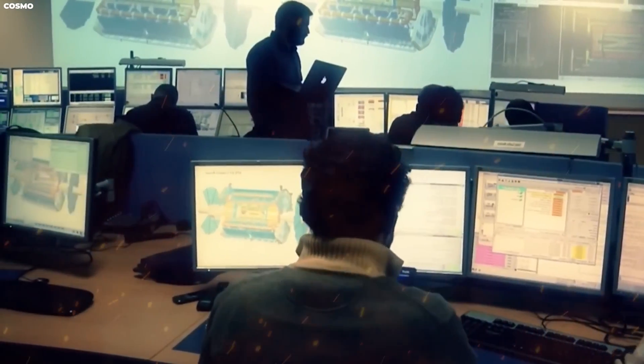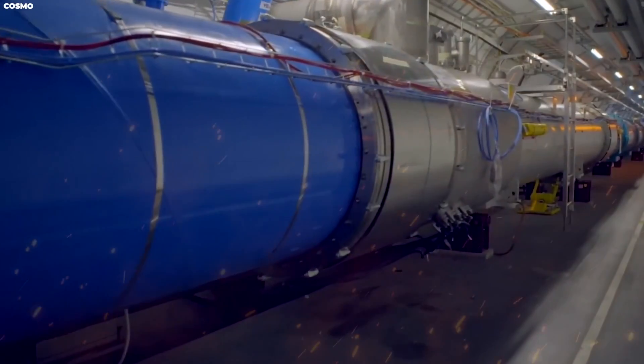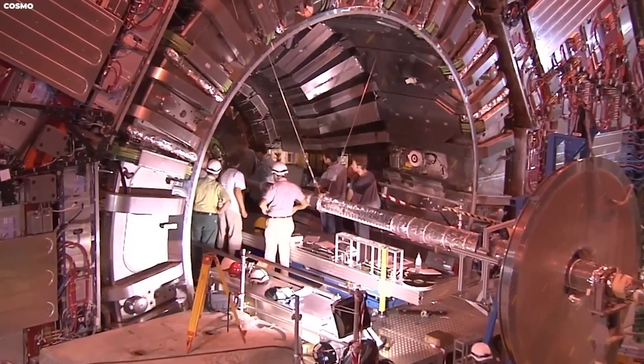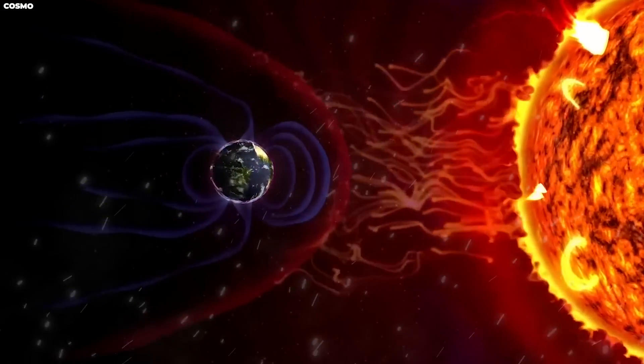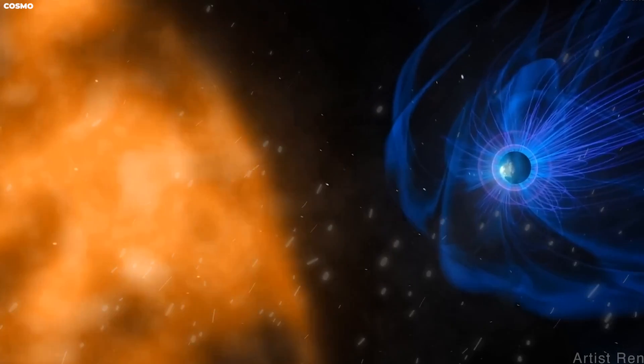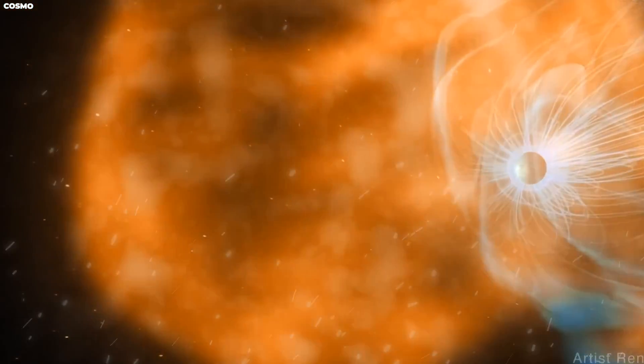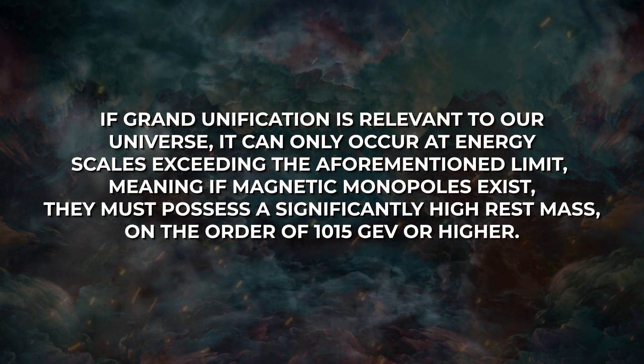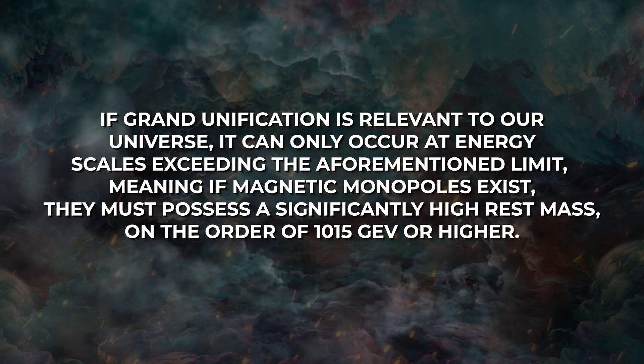The Large Hadron Collider is an important tool for studying the potential existence of magnetic monopoles, as it is able to produce magnetic monopoles at extremely high energy scales. Additionally, the upper limit to the temperature achieved during the hot Big Bang phase is determined by constraints imposed by observations of gravitational waves, which must be generated by inflation. If grand unification is relevant to our universe, it can only occur at energy scales exceeding the aforementioned limit, meaning, if magnetic monopoles exist, they must possess a significantly high rest mass.